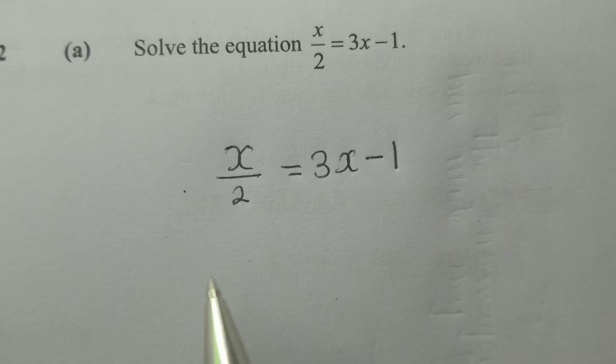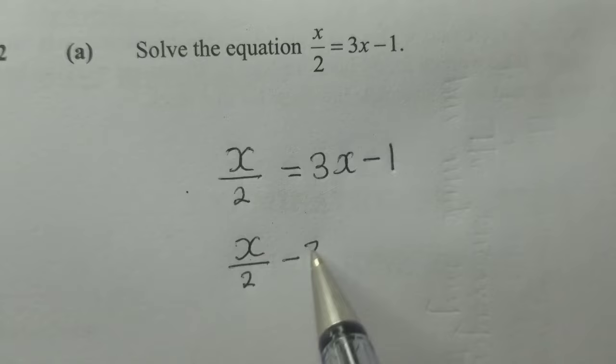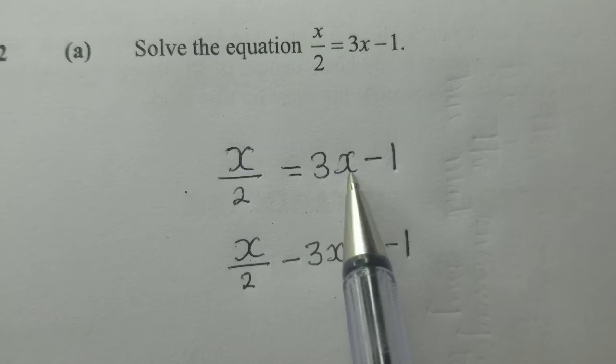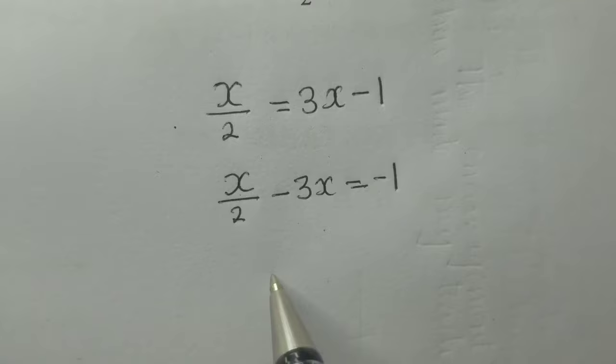We group the like terms, so it will be x/2 - 3x = -1. Make the 3x cross the equal sign. Then we find the lowest common denominator, which is 2.